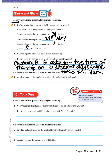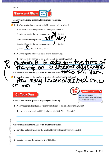Number three: Write a statistical question you could ask in the situation described. A possible answer could be: 'How many households had one or more pets?' That is a specific question, but it would have multiple answers depending on how many people you asked, which makes it a statistical question.